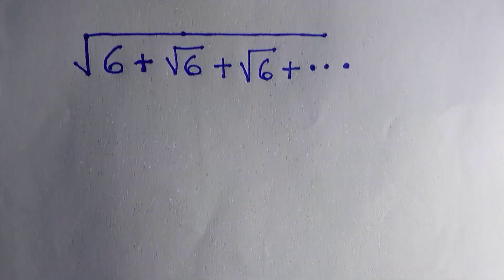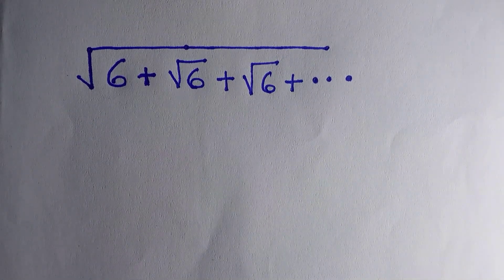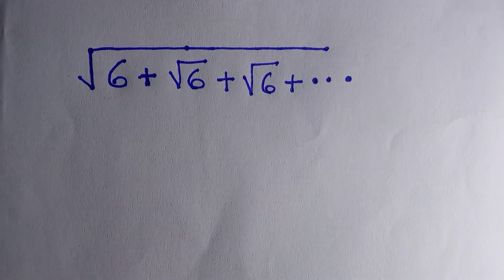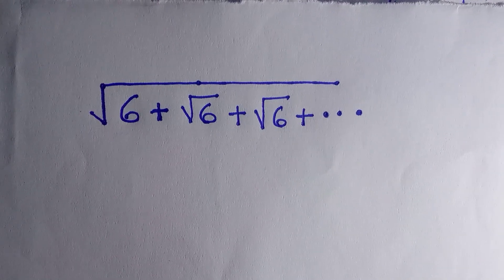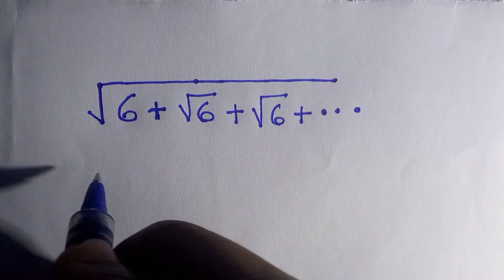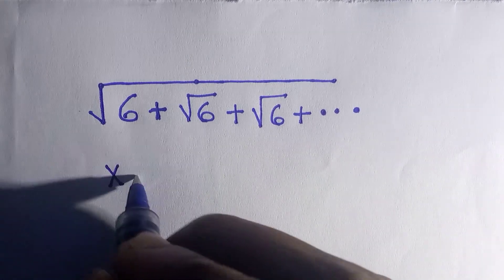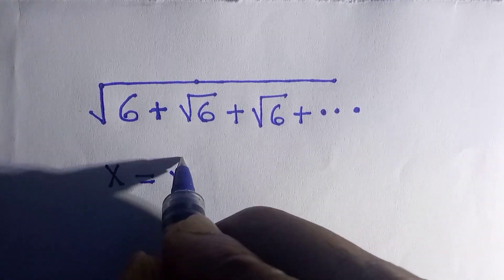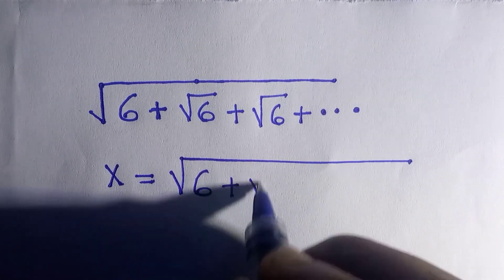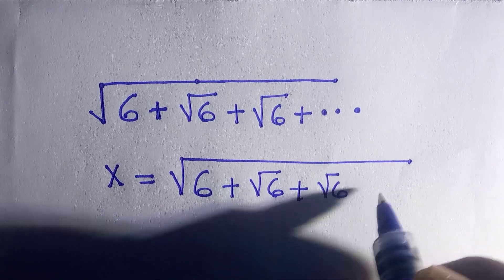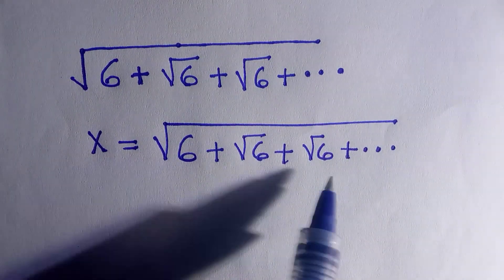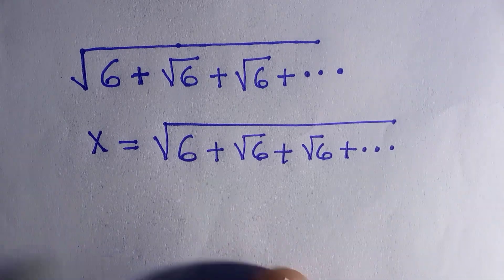Welcome to another video. Let's expand this nested radical problem. What we're going to do here is let all these roots equal any letter. I'm choosing x equals the root of all these, that is 6 plus root 6 plus root 6 plus dot dot dot.